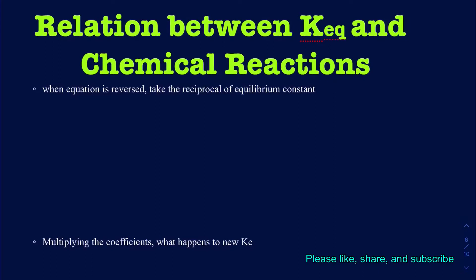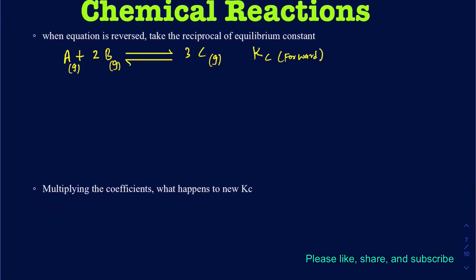So let's take a simple example where I have A plus 2B and then it goes on to make, let's suppose, 3C, just hypothetically here, and then suppose everything here is in the gas form. So I have this equilibrium constant to be Kc and I can just call that forward because I'm just going forward in this case. Now what happens if I flip this reaction? So when I say flip this reaction, that really means your reactants become products and your products become reactants.